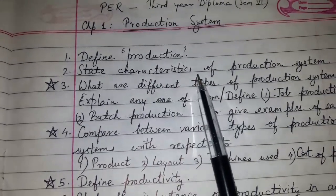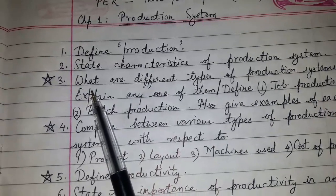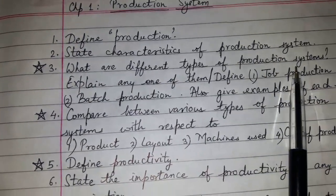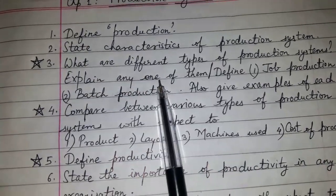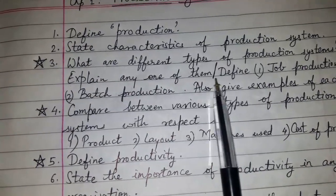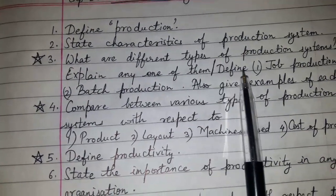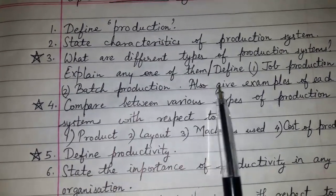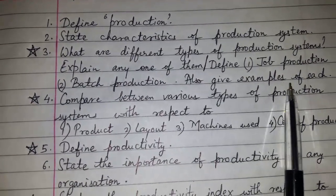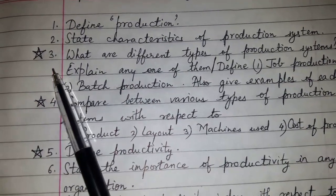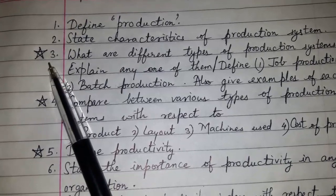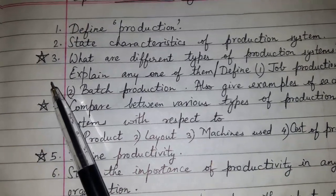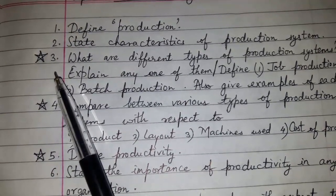Chapter One: Production System. Question number one: define production. Question number two: state the characteristics of a production system. Question number three: what are the different types of production systems? Explain any one of them.